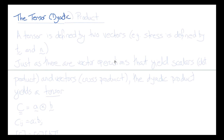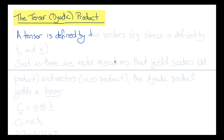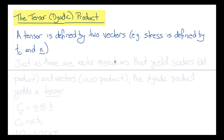Now let's move on to a new notation: the tensor or dyadic product. The name tensor product refers to the result of the operation; the name dyadic refers to the operator. We've said before that a tensor is defined by two vectors. For example, the stress tensor is defined by the traction vector T, which has units of force per unit area, and a unit normal vector N, which is dimensionless. We'll be introduced to other tensors as the course goes on.